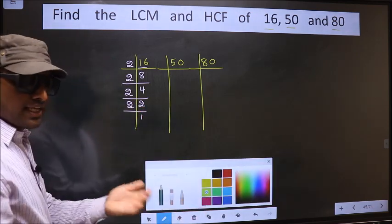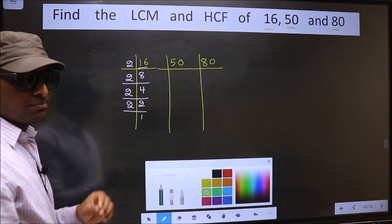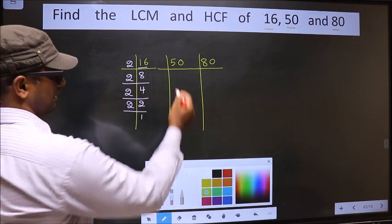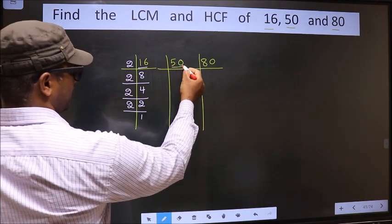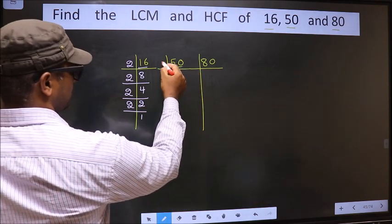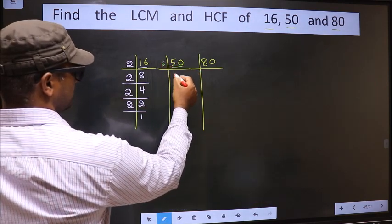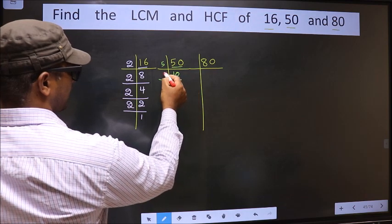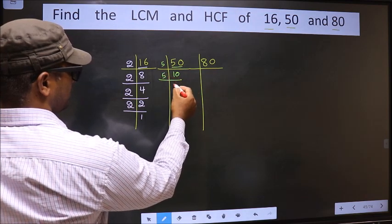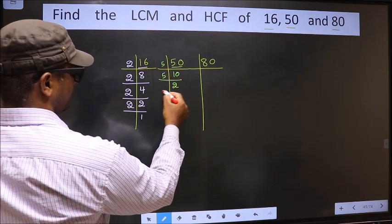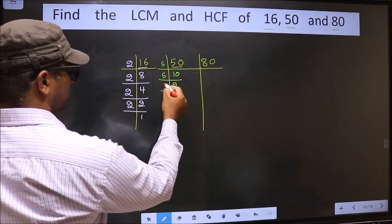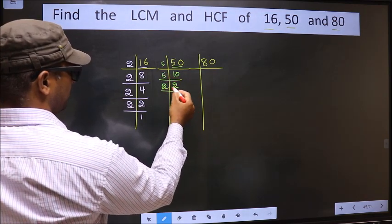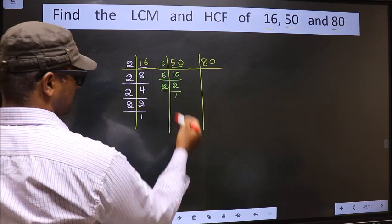Now the other number, 50. 50 is 5 times 10. 10 is 5 times 2. Now we have 2, and 2 is a prime number, so 2 times 1 is 2. So 50 = 5 × 5 × 2.